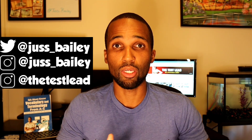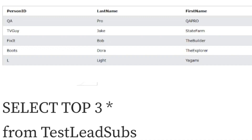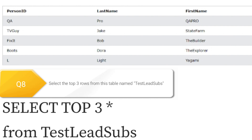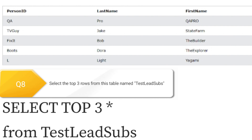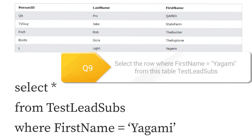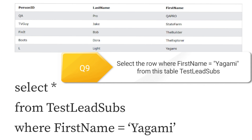Now for questions eight, nine, and ten, we're going to actually query a table. Question eight: select the top three rows from the table named test_lead_subs. As you can see there are five rows and three columns. To select the top three, we will use: SELECT TOP 3 * FROM test_lead_subs. Remember, the asterisk returns all columns, and test_lead_subs is the table name.